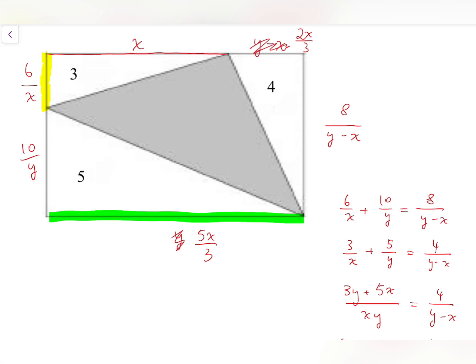And then for 8 over y minus x, I can replace the denominator by 2x over 3. And so 8 divided by 2x over 3 equals 8 multiplied by 3 over 2x and is 12 over x.